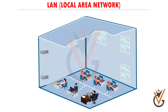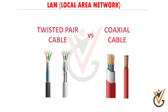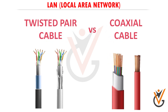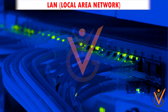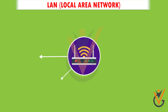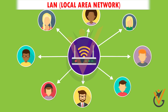Local Area Network is a group of computers connected to each other in a small area such as a building or office. LAN is used for connecting two or more personal computers through a communication medium such as twisted pair, coaxial cable, etc. It is less costly as it is built with inexpensive hardware such as hubs, network adapters, and Ethernet cables. The data is transferred at an extremely faster rate in a local area network.